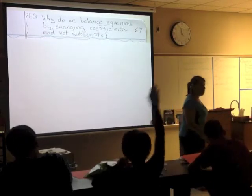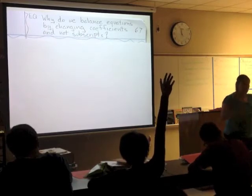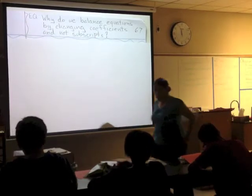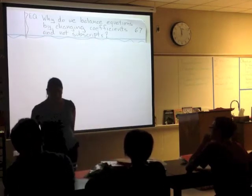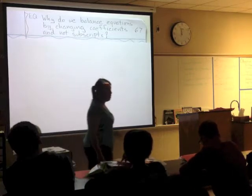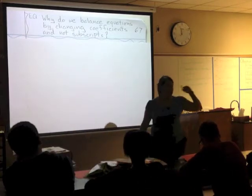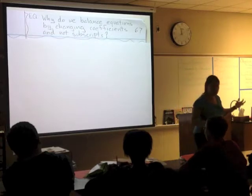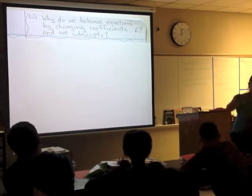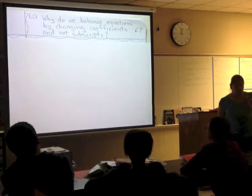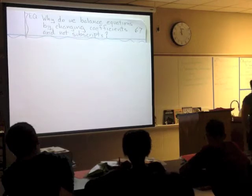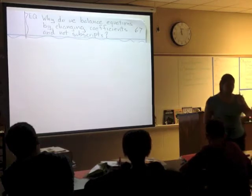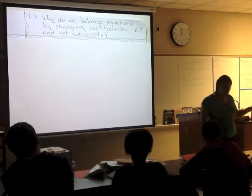Who thinks they can remember what a coefficient is? Let's start with coefficients. A coefficient is like the number in front of the element. What is the big number in front of a compound telling you? It's showing you how many molecules you have of that compound. So if I say 3H2O, that three is a coefficient — it's the big number — and that three is telling me that I have three molecules of water.